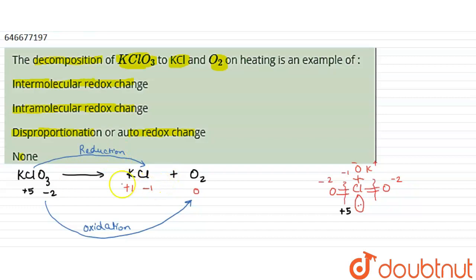So you can infer that in a compound, if one element is reduced and another element is oxidized, this is known as intramolecular redox change.